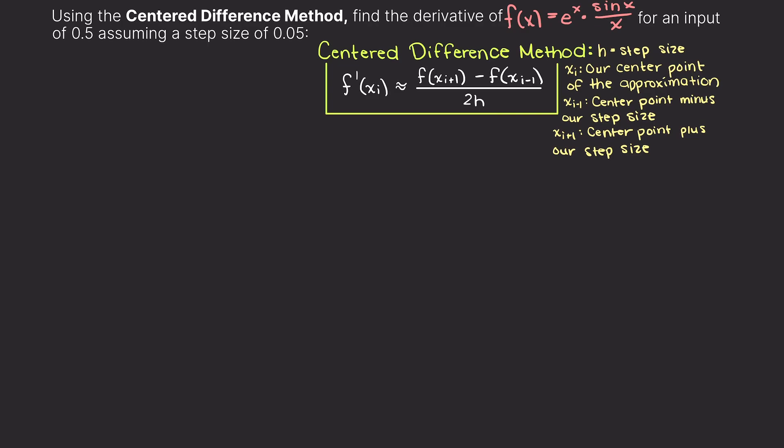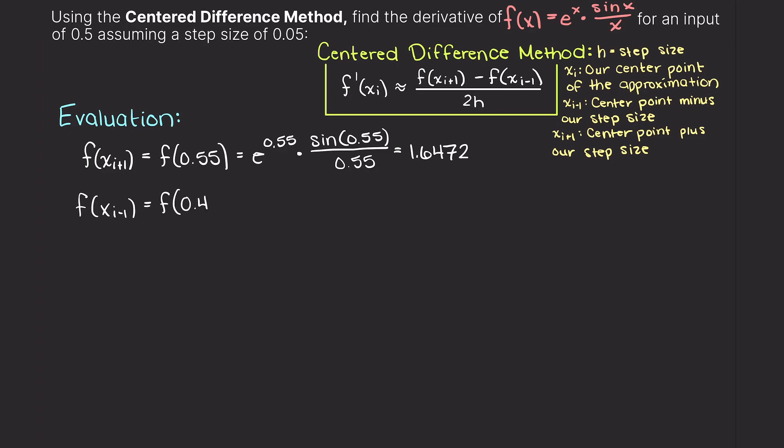Well although this function may have not been fun to solve analytically in the past, let's note how easy and quick it is to find the derivative with numerical differentiation. So, we'll just evaluate our function at 0.45 and 0.55 just like we did before.